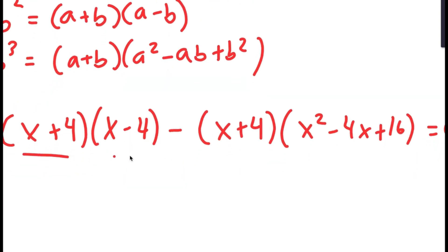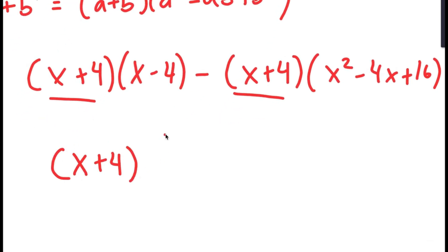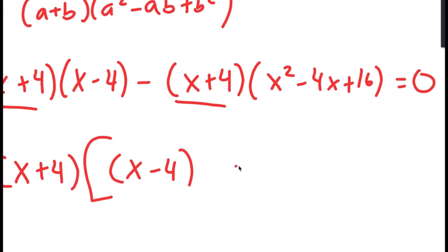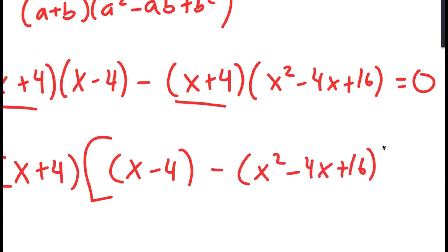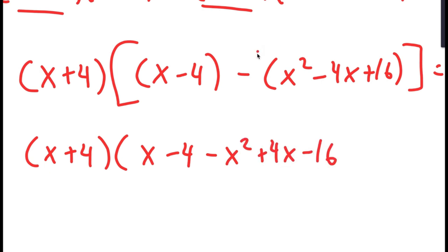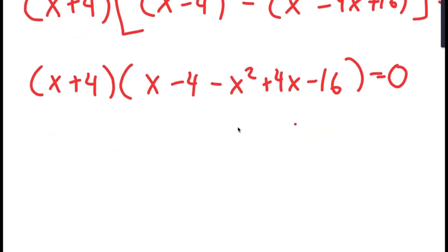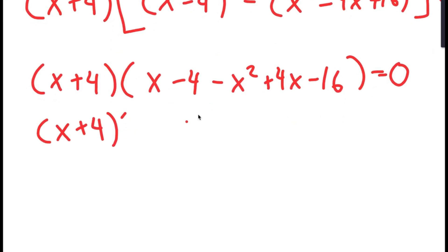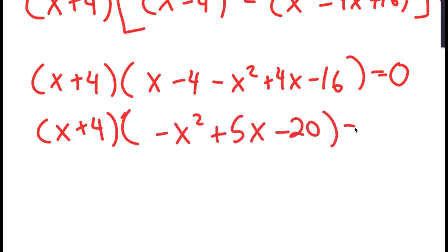Because both of these terms have x plus 4 in them, I can factor out x plus 4. So I get x plus 4 times x minus 4 minus x squared minus 4x plus 16, which equals 0. Distributing the negative sign gives x plus 4 times negative x squared plus 5x minus 20, equal to 0.